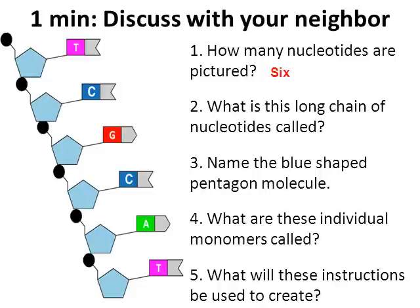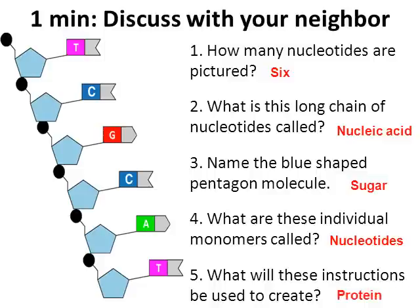Number two: all total, what would this long chain of nucleotides be called? A whole collection of nucleotides is called a nucleic acid. Number three: name the blue pentagon-shaped molecule. The pentagon-shaped molecule is the sugar — there are three parts to a nucleotide: a sugar, a phosphate, and a nitrogen base. Number four: what are these individual monomers called? Those individual monomers are called nucleotides. Number five: what will these instructions be used to create? Nucleic acids are instructions to tell your cells how to build a protein.